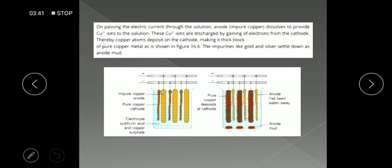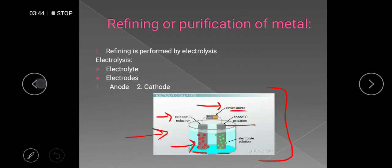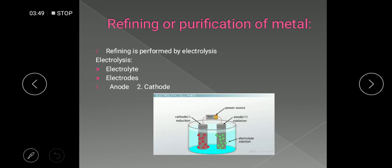In the refining and purification of metal, what happens at both electrodes? The cathode and anode must also be made of something specific. In the anode we place impure copper — this is the metal we have already extracted from the ore in the earlier step of metallurgy. The cathode, on the other hand, has to be pure copper, on which we will deposit the ions.